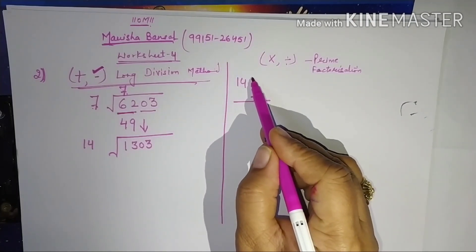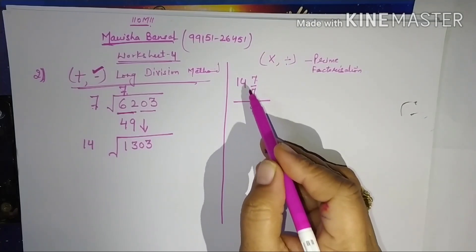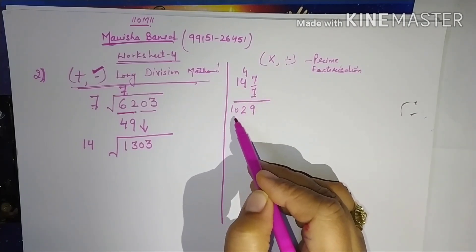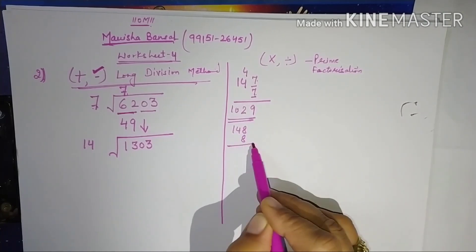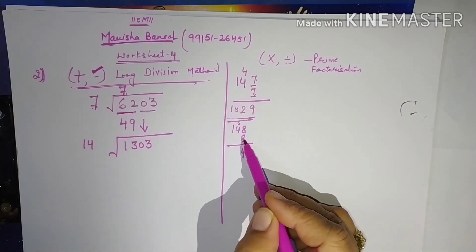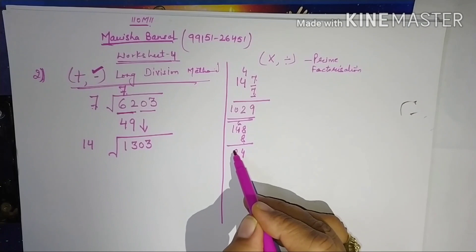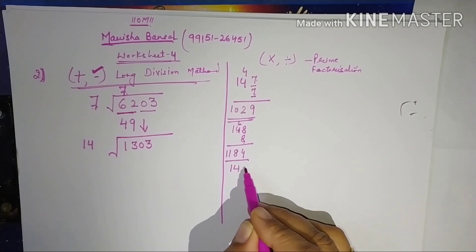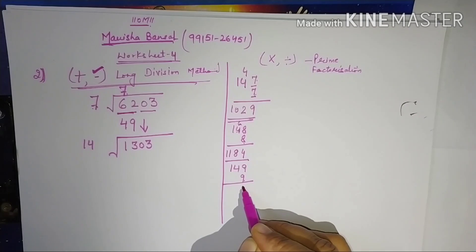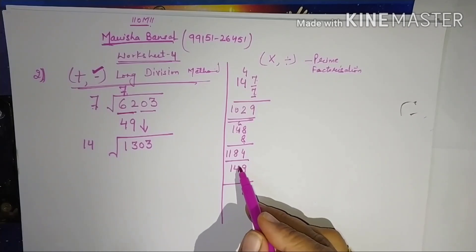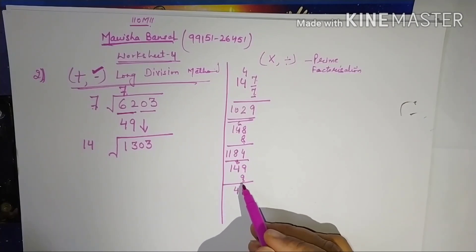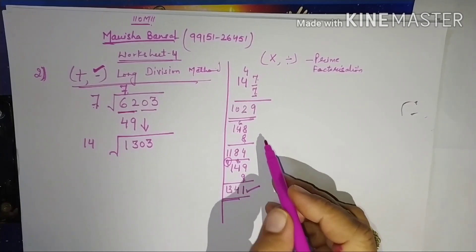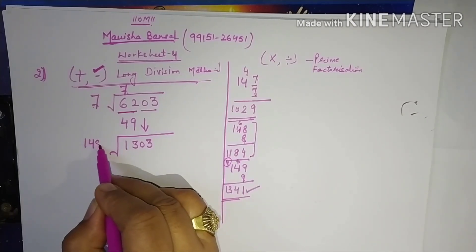Let me try with 7: 147 × 7 = 1029. Let me try with 8: 148 × 8 = 1184, which gives remainder 1303 - 1184 = 119. Let me try with 9: 149 × 9 = 1341, which is greater than 1303. So 9 is too big. I will go with 8, placing 8 in the quotient and 8 in the divisor.